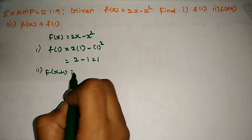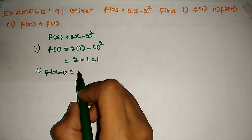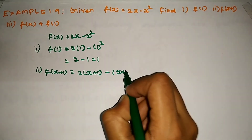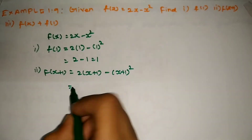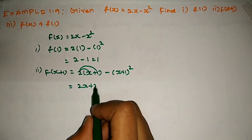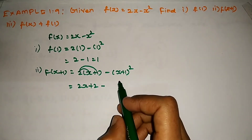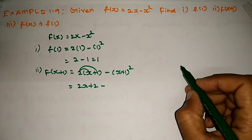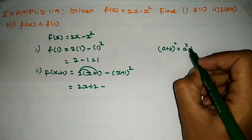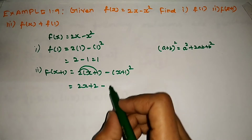The next substitution is f of x plus 1. We replace x with x plus 1. So f of x plus 1 gives us 2 times x plus 1 minus x plus 1 the whole square. Now we see the a plus b whole square formula. A plus b the whole square is equal to a squared plus 2ab plus b squared. Let's apply this formula.